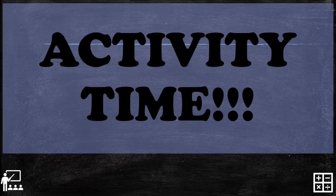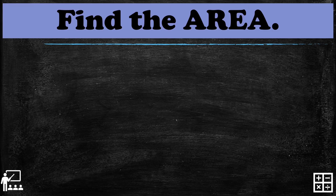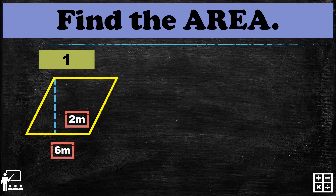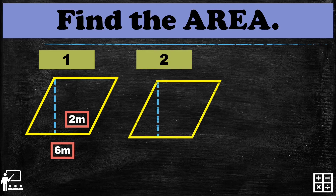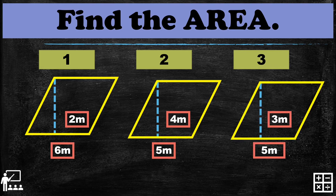Now it's activity time! Find the area of each parallelogram. Number 1 has a base of 6 meters and a height of 2 meters. Number 2 has a base of 5 meters and a height of 4 meters. Number 3 has a base of 5 meters and a height of 3 meters. You have 30 seconds — your time starts now!